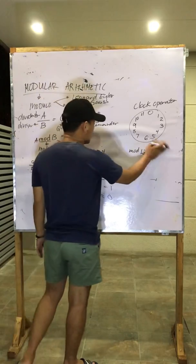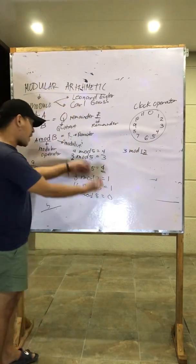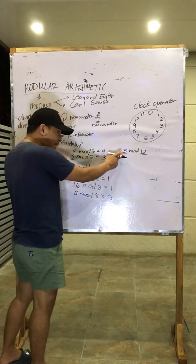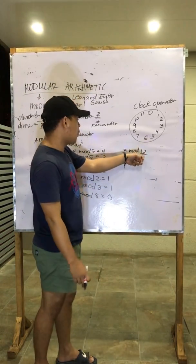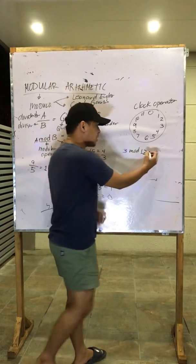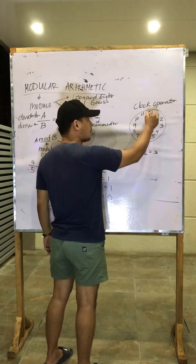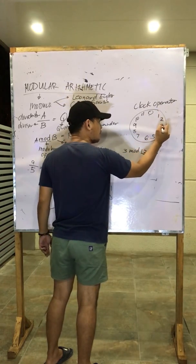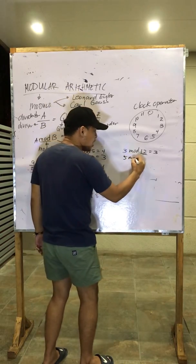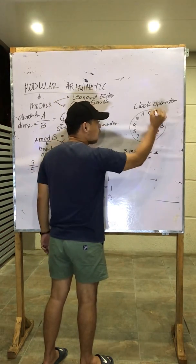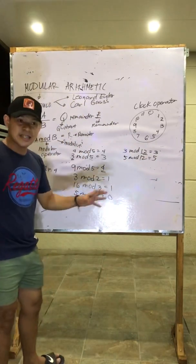Let us try 3 mod 12. Since 3 is less than our divisor or modulus, the result is 3. Using the clock operator, starting from 0 and counting 1, 2, 3 — therefore the result is 3. For 5 mod 12, counting 1, 2, 3, 4, 5 — the result is 5, since 5 is less than 12.